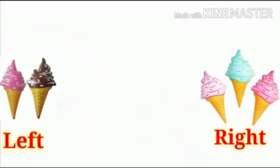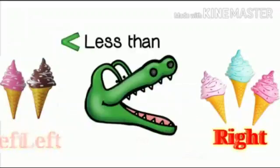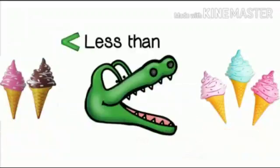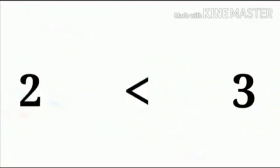Now see another example. Here we can see few ice creams on the left and right side. Can you tell me which side is having more number of ice creams? Yes, the right side is having more number of ice creams. And Krokodai should open his mouth for the right side. We can see 2 ice creams are less than 3 ice creams. And if we represent it with a number, we can say 2 is less than 3.